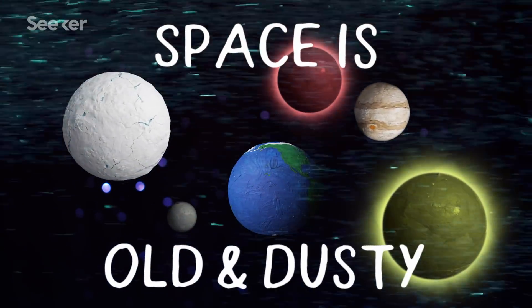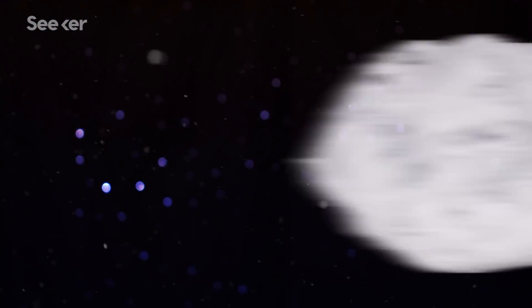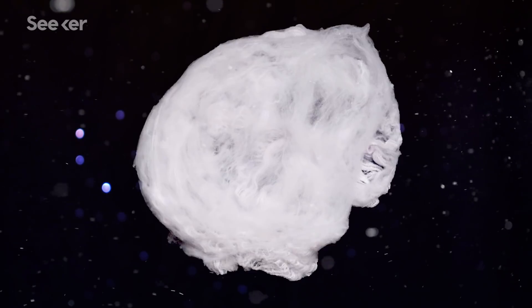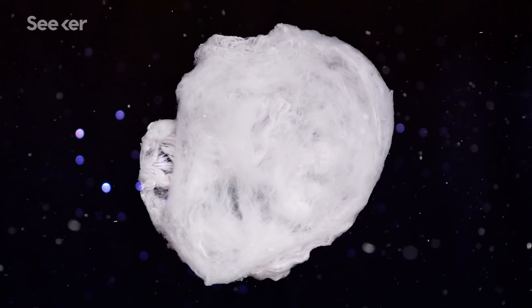Space is a very old and dusty place. And that's because our solar system began as a big cloud of gas and dust billions of years ago.